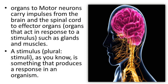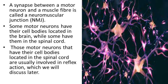A stimulus is something that produces a response in an organism. Motor neurons carry impulses from the brain and spinal cord to the effector organs. Motor neurons that have their cell bodies located in the spinal cord are usually involved in reflex action, which we will discuss later.